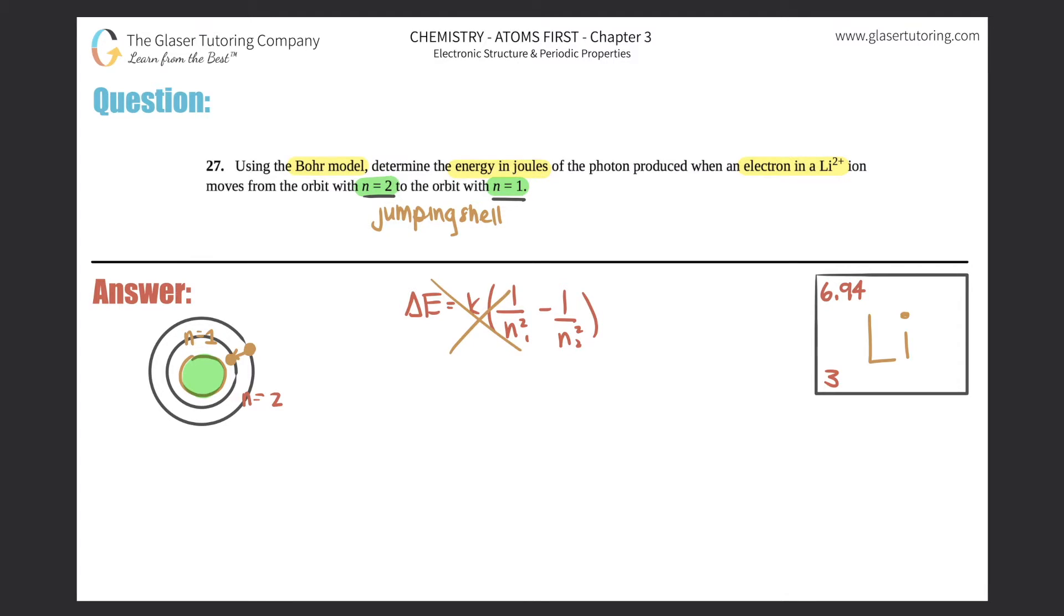But unfortunately, we can't use this. It's not that simple. We can't just plug in 2 for this and 1 for this because this equation is only for hydrogen, because hydrogen's nuclear charge is 1. However, we have lithium. So we have to find a different way to get to this answer.